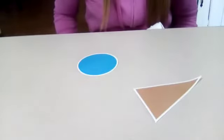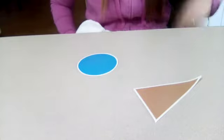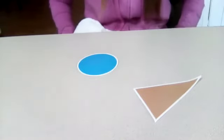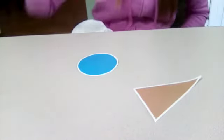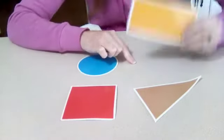What shapes are missing? Can you remember? We have circle, triangle, square, and rectangle.